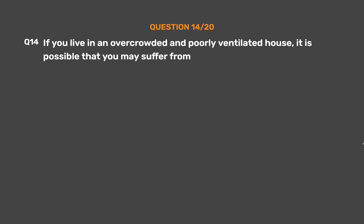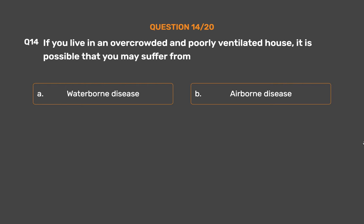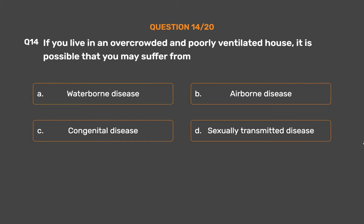Question number 14. If you live in an overcrowded and poorly ventilated house, it is possible that you may suffer from: Option A: Waterborne disease. Option B: Airborne disease. Option C: Congenital disease. Option D: Sexually transmitted disease.